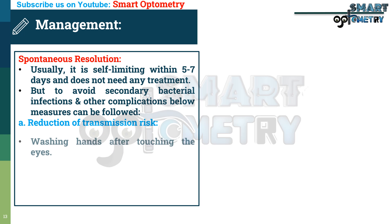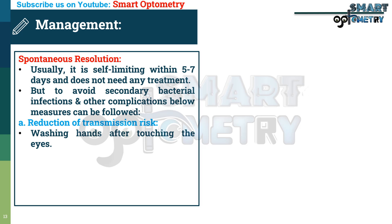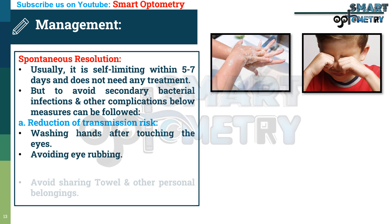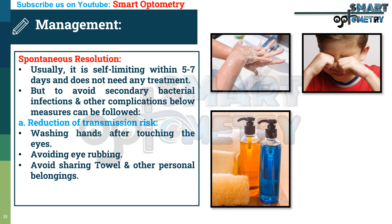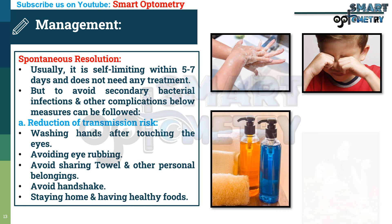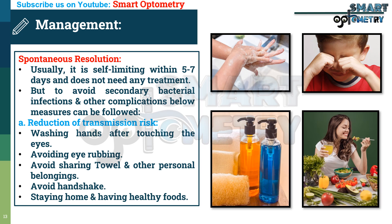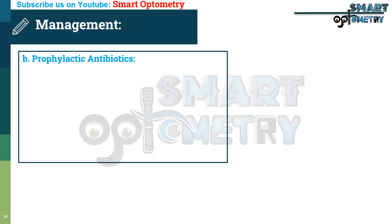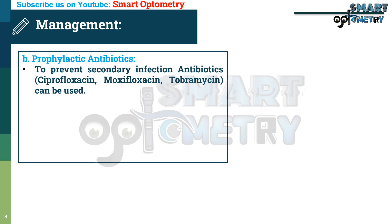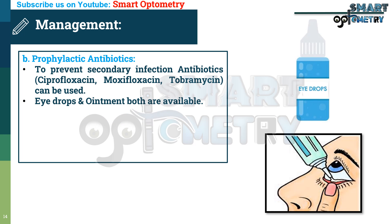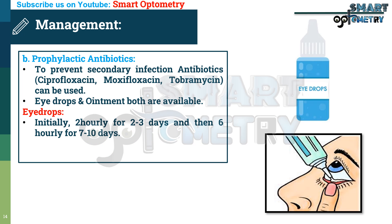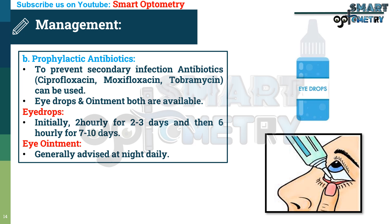A — Reduction of transmission risks: washing hands after touching the eyes, avoiding eye rubbing, avoiding sharing towels and other personal belongings, avoiding handshakes, and staying home while eating healthy foods. B — Prophylactic antibiotics: to prevent secondary bacterial infections, antibiotics can be used. Both eye drops and ointment are available. Eye drops: initially 2-hourly for 2 to 3 days, then 6-hourly for 7 to 10 days. Eye ointment is generally advised at night, daily.